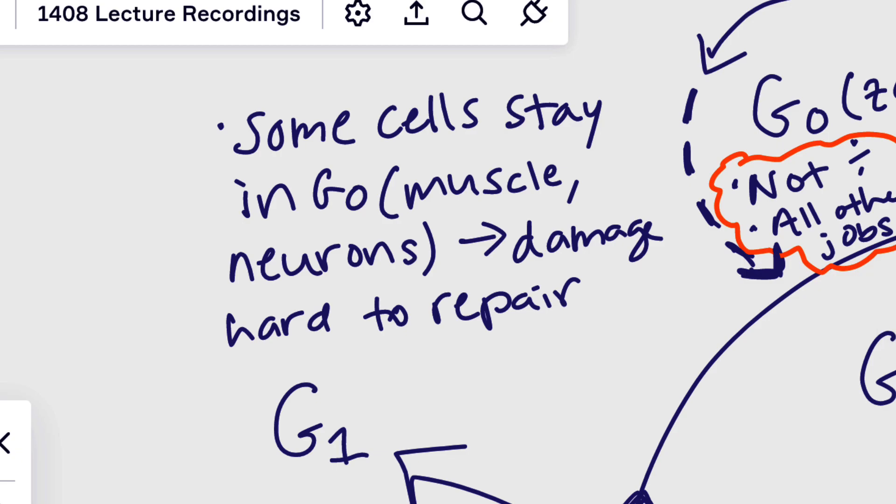Because those cells can't divide after they're damaged. So we have stem cells that can replace those cells in the population, but not really damaged ones as well as other cells.